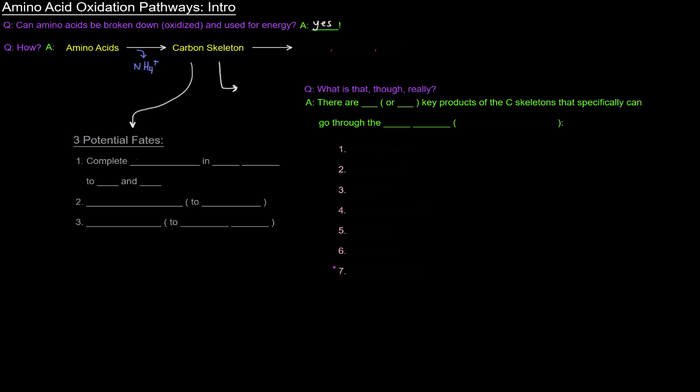The first fate is complete oxidation in the TCA cycle to carbon dioxide and water, which is actually what we're going to be talking about, because this whole series is about amino acid oxidation.